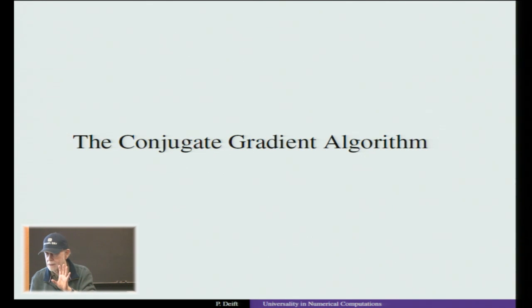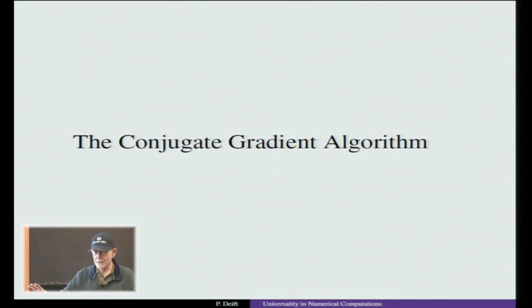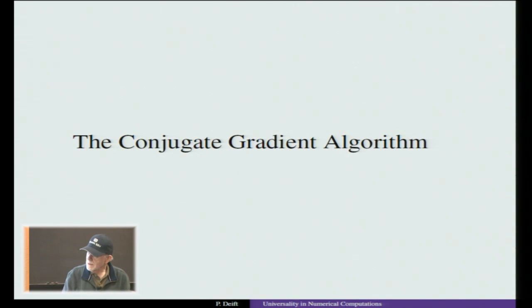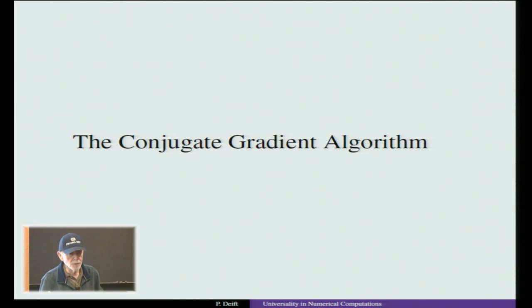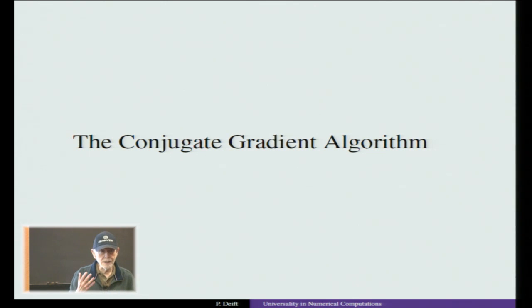It turns out that GOE and GUE give the same fluctuation histogram too — initially we thought they were different, but they aren't, which is itself interesting. Everything I'm saying today is numerical observation. We had come to the strong feeling that the phenomenon was present in eigenvalue computation, and then asked whether it would appear in other standard numerical computations — always using absolutely standard, unmodified algorithms.